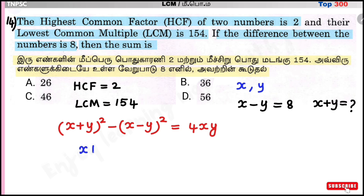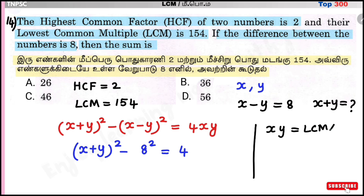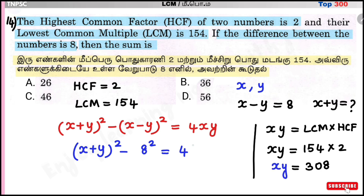We know that the product of two numbers equals LCM × HCF. So x×y = 154×2 = 308. Substituting: (x+y)² - (x-y)² = 4×308 = 1232. So (x+y)² - 64 = 1232.